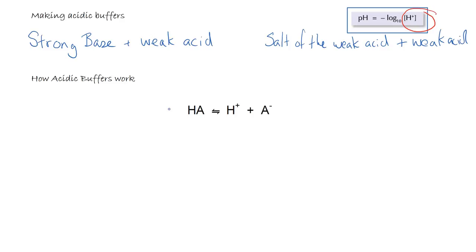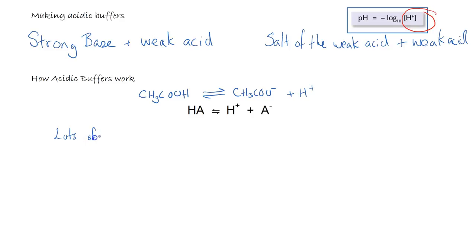How do acidic buffers work? Let's take the example here where we've got a weak acid HA. We'll also include ethanoic acid as an example, and we'll have the salt which is the ethanoate ion plus the hydronium. If this is just the weak acid, what we have to start off with is lots of acid and small amounts of the hydronium and also of the salt.